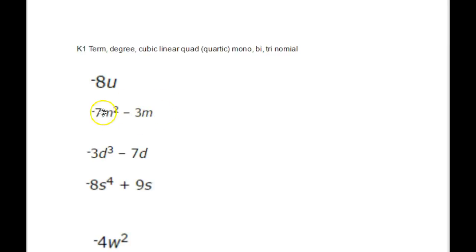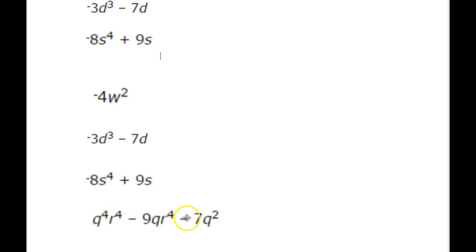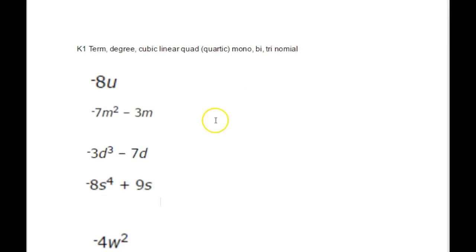So this polynomial is degree 2, this polynomial is degree 3 because that's the highest order term, and here even though there's a degree 4 term and a degree 1 term, we consider the polynomial to be degree 4 because that is the highest order term. For a more unusual case with two different variables, you calculate the degree by adding together the exponents of everything multiplied in that term — so here 4 plus 4 gives a degree of 8.